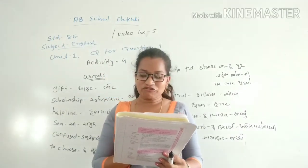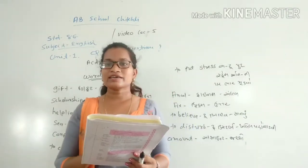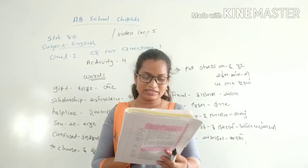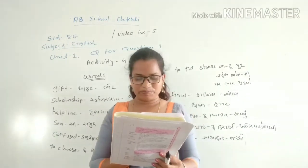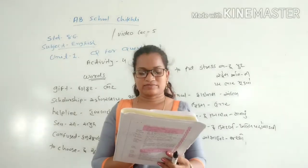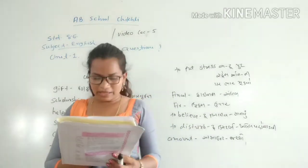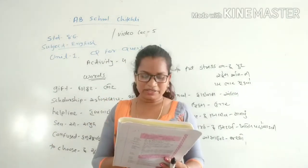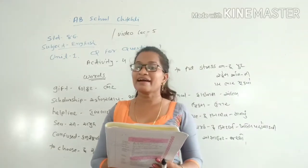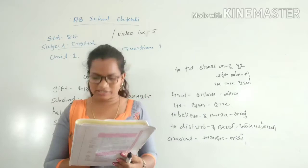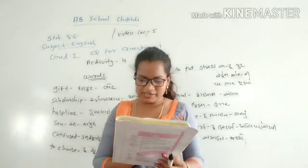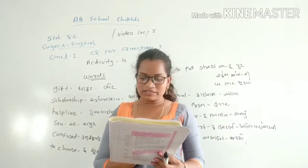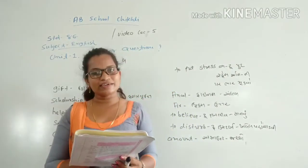Mr. Parmar asks, 'Is it your final answer?' Nandita confirms her final answer. Mr. Parmar says, 'So let's see. Mr. Bright, please show the right answer.' The answer is shown on the computer screen — and yes, you are right! It is B. You win the first gift. Kalabi wrote this Gujarati poem.